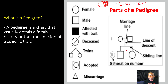The same thing can be said for a male as well. So we have a square right here and it's half shaded in — this is going to represent a male who is a carrier for a certain trait. An individual who is dead or deceased is going to be a circle or a square with a line drawn through it. And then this represents twins — notice that they come from this one point and then they branch off. An individual that is adopted is going to have brackets around them. And then if a woman has a miscarriage, it's going to be represented by a triangle.